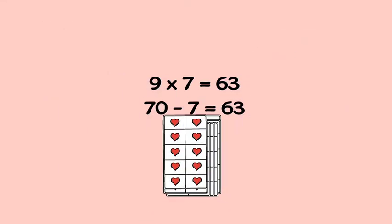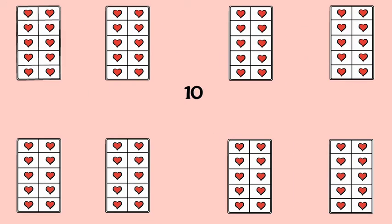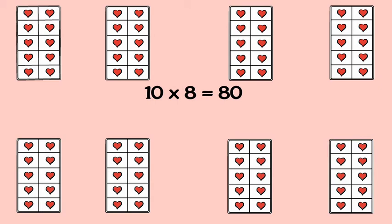How about 9 × 8? 10 × 8 is 80. Take away a group of 8. So 9 × 8 is 72.